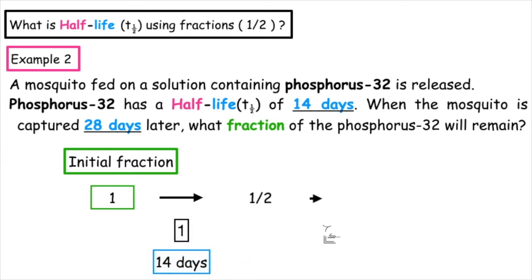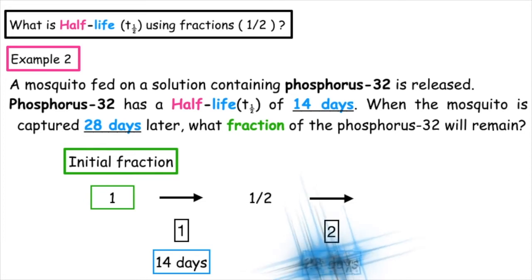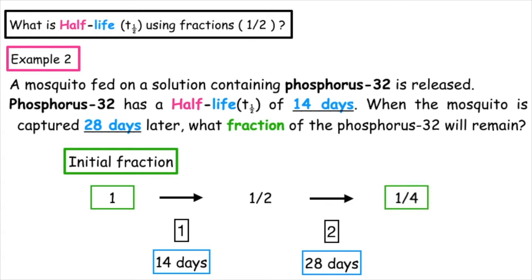If it undergoes a second half-life, that will give us a total of 28 days, which is given in the question. That means the final fraction of the phosphorus-32 will be a quarter.